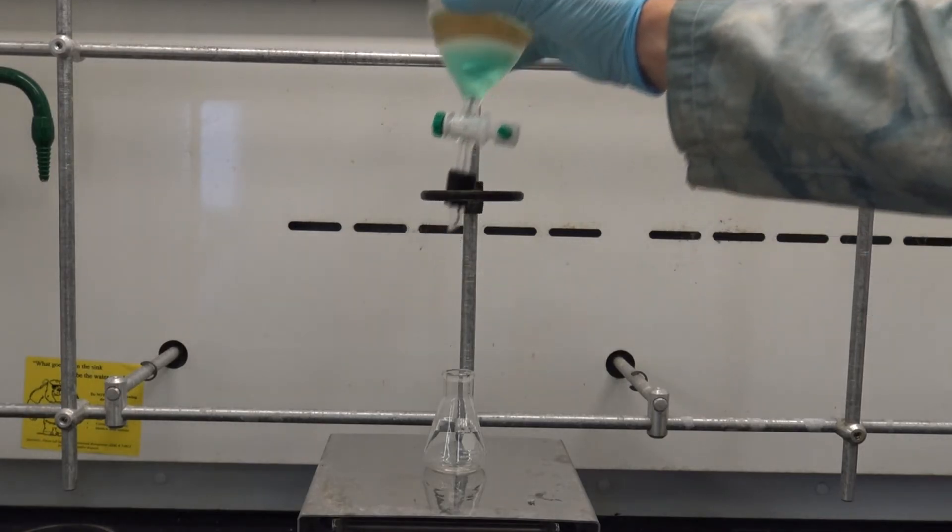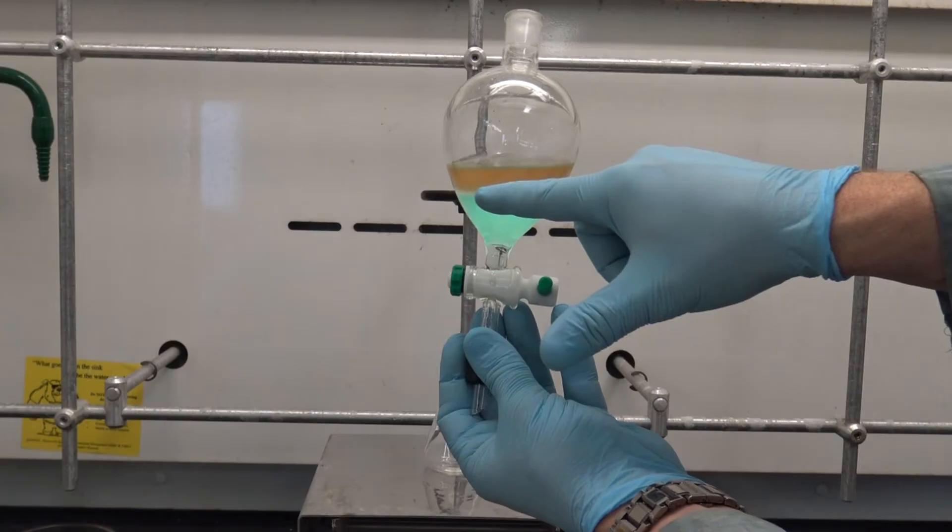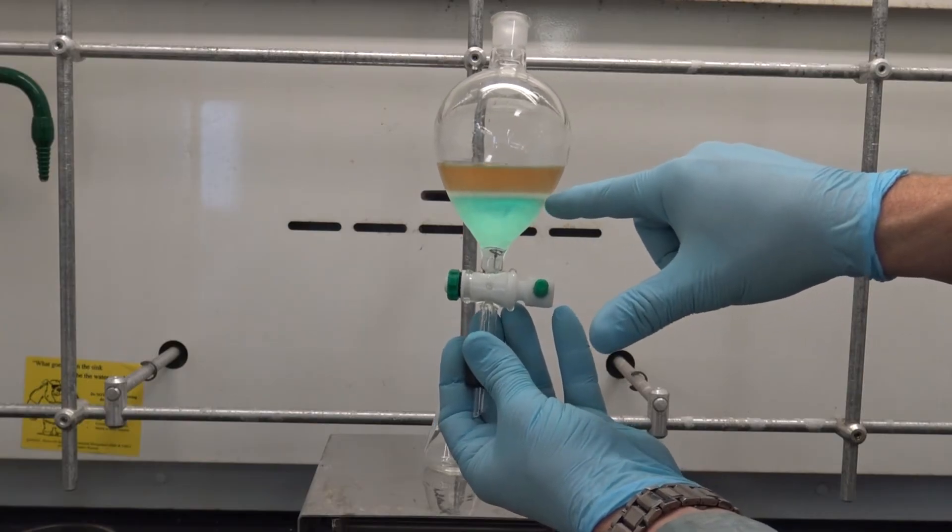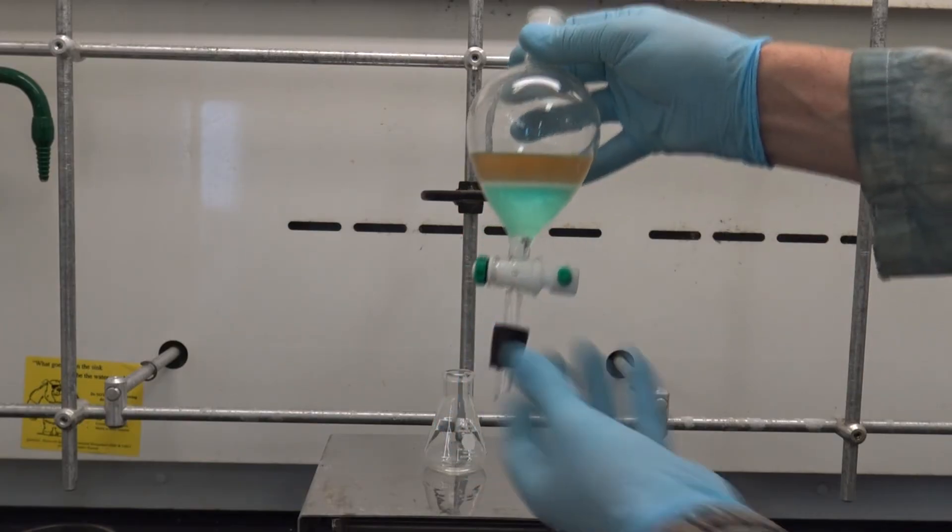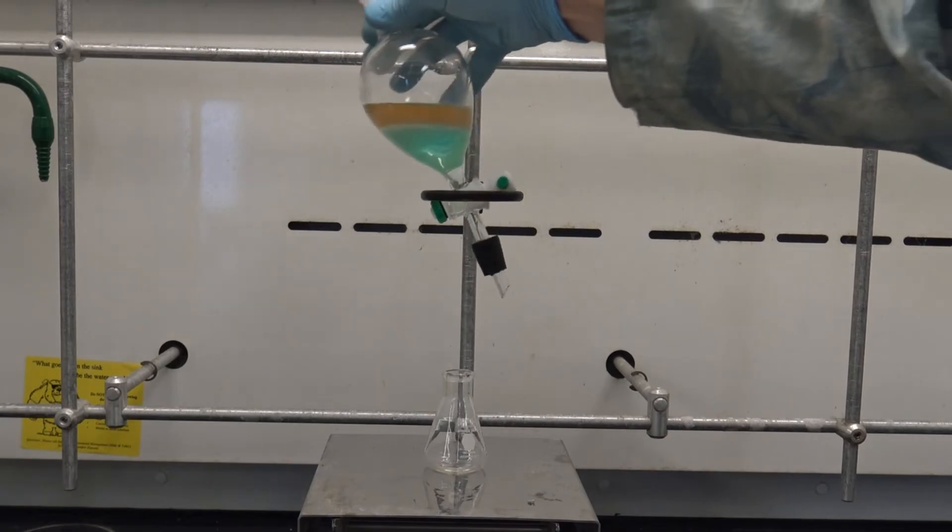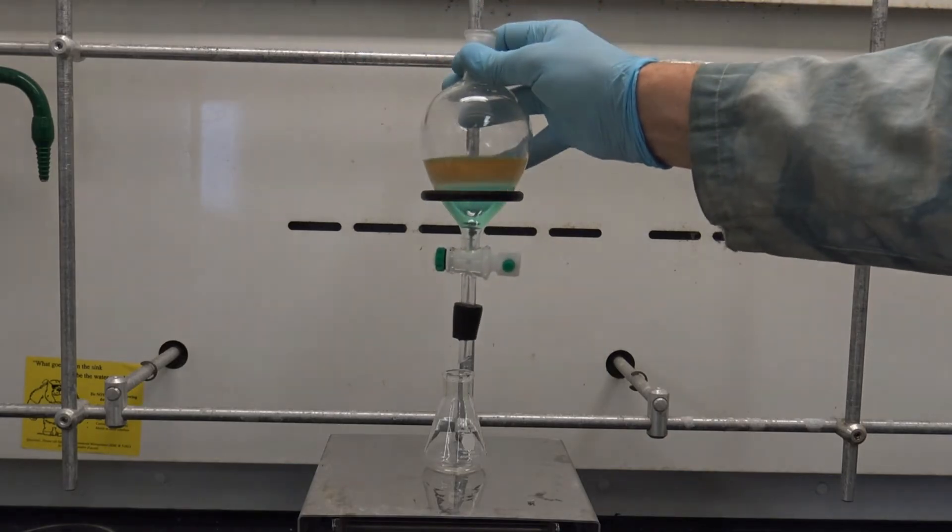After a period of time, you'll begin to see a change happening. Notice that I've got a thin layer of emulsion between the two, and we'll deal with that later. But for now, you'll notice that I have a blue layer underneath of a yellow layer where I used to have a green solution.